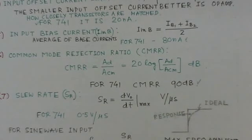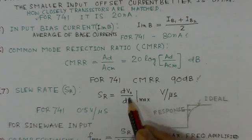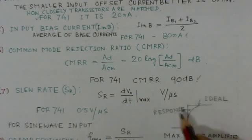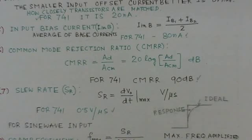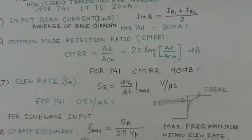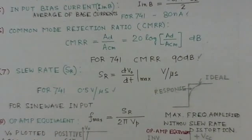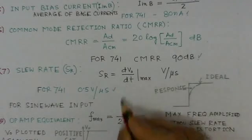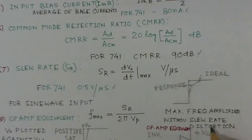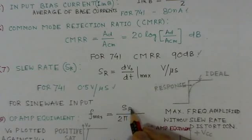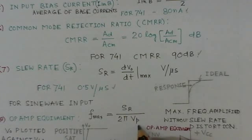Slew rate is another important parameter — it is the maximum rate of change of voltage with time. For the 741, the slew rate is about 0.5 volts per microsecond. For a sine wave input, you can find dV/dt, and from the slew rate you can determine the maximum frequency that can be amplified without distortion: F_max = SR / (2π × V_p), where V_p is the peak value of the input signal.